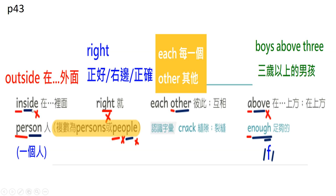Inside：In是在里面，side是边边，在这个边的里面，翻译成在里面。相反词是Outside，双箭头写一下，Inside↔Outside。第二个字是Right，G-H不发音，只念到R-I-T，Right。